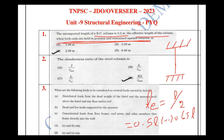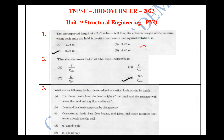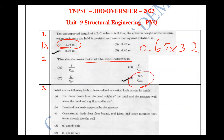Looking at the question, the span is 3.2 meters. The effective length is 0.65 × 3.2, which gives 2.08 meters. So the answer 2.08 meters is correct. In the final answer key, options A and D are correct.